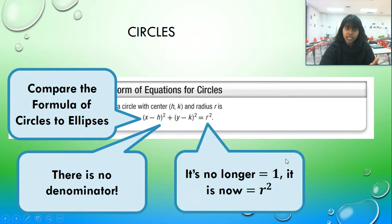There is no denominator, and it is no longer equal to 1. It's now equal to r squared. So note the big difference: there are no denominators. That means, in essence, a and b must be equal to 1.